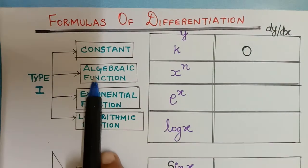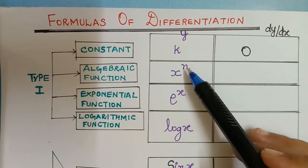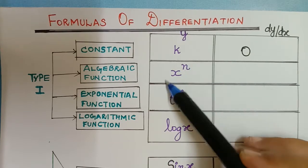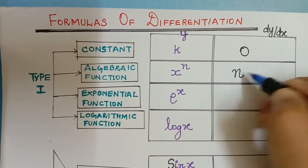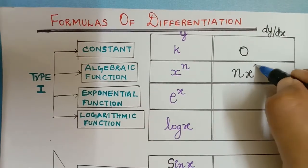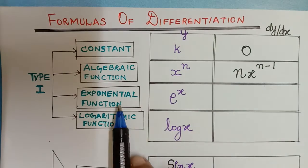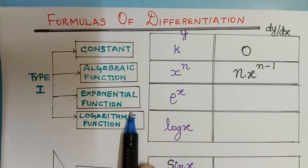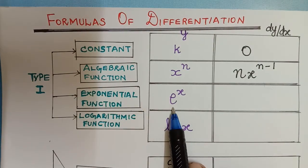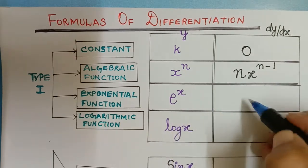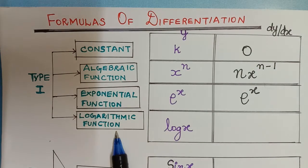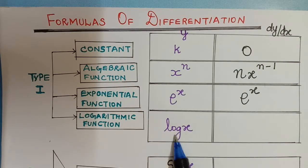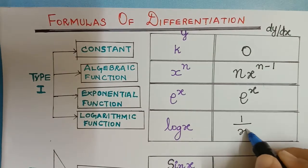The next is the algebraic function, which is x power n. When we differentiate x^n, we get n·x^(n−1). Then we have the exponential function — the differentiation of e^x is the same e^x. And then we have the logarithmic function, log x, whose differentiation is 1/x.